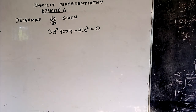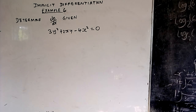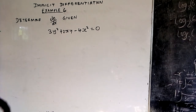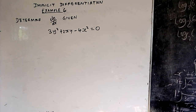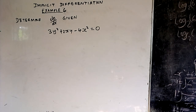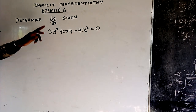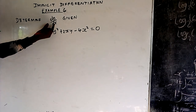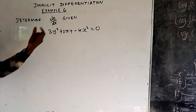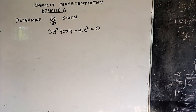Example number 6 on implicit differentiation. You'll be told to determine dy/dx given 3y² + 2xy - 4x² = 0. So if you want to determine dy/dx, meaning you differentiate everything with respect to x.